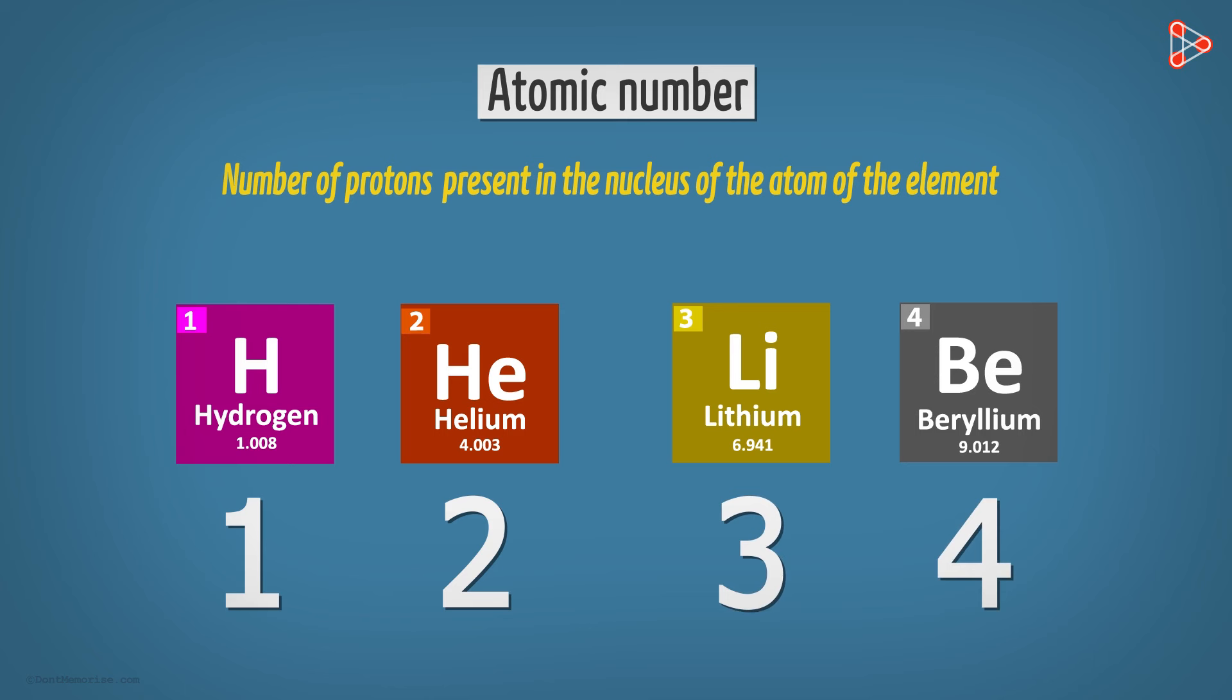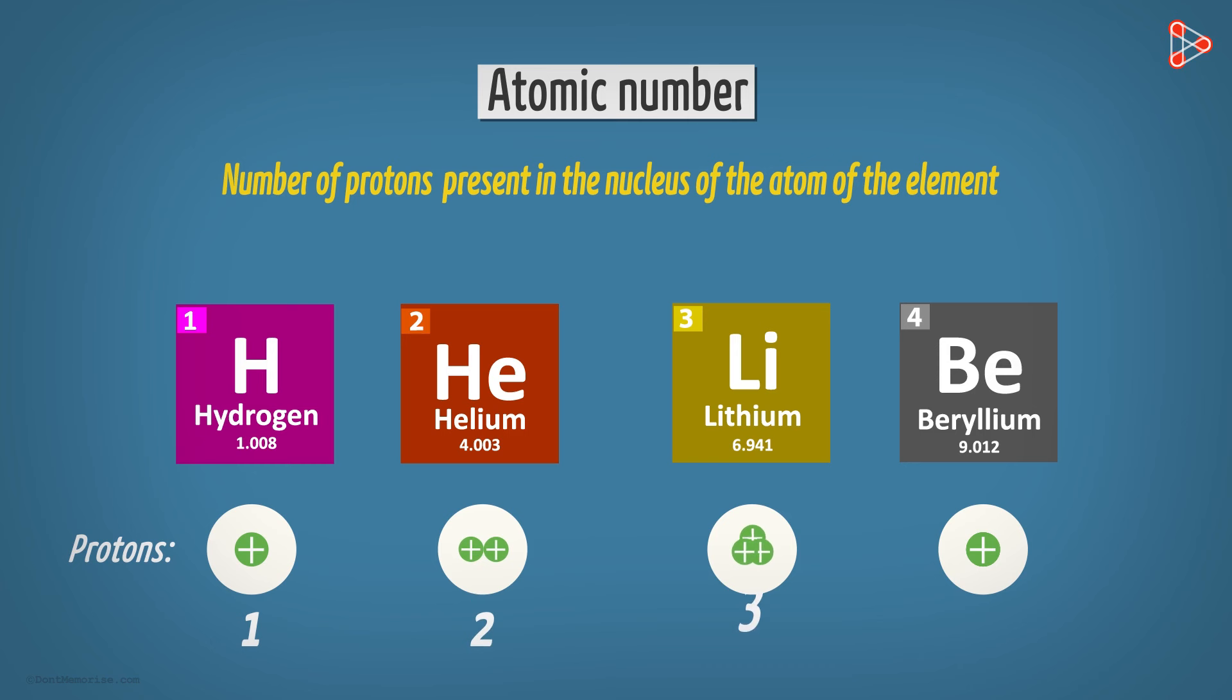So why are these elements assigned these particular atomic numbers only? Can we change these numbers ever? No, we can't. That is because they have these respective numbers of protons in their nuclei. Hydrogen has just 1 proton in its nucleus. Similarly, Helium has 2 and Lithium has 3. And how many protons will Beryllium have? Correct! It has 4 protons.